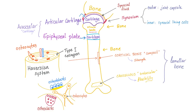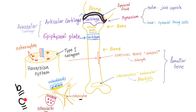Cartilage is avascular. The synovium or synovial membrane has an outer layer forming the joint capsule and an inner layer forming the synovial lining. The synovium lines the inside of the joint — same concept as the conjunctiva in your eye. Remember: osteoblasts build up bone, while osteoclasts cut down bone.